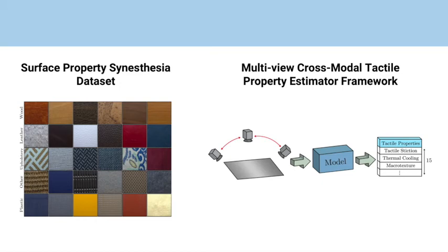In this work, we introduce the challenge of directly estimating tactile physical properties from images. We generate the largest visio-tactile dataset comprised of images of surfaces and corresponding physical property measurements. Additionally, we develop a novel multi-view multimodal framework to achieve state-of-the-art performance on tactile physical property estimation from surface images.